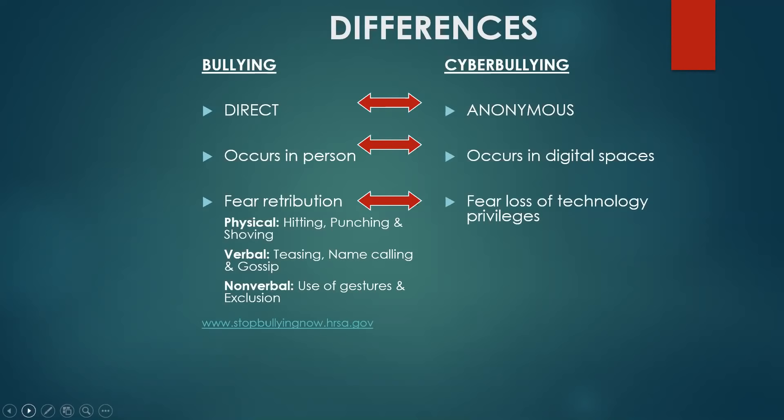Sometimes cyberbullying goes unreported because of fear of loss of technology privileges — this is most common with children or youth who don't have main authority over their tools. Our conversation today looks at both youth and families receiving care through systems of care and also workplaces and how we relate to each other. There are technology use rules and privileges in the workplace, and fear of retribution can come from bringing attention to cyberbullying.